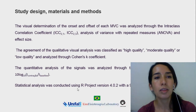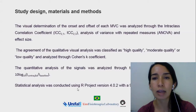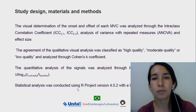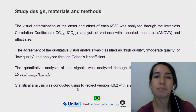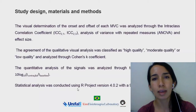The visual determination of the onset and offset of each maximal voluntary contraction was analyzed through the intraclass correlation coefficient, analysis of variance with repeated measures, and effect size. The agreement of the qualitative visual analysis was classified as high, moderate, or low quality and analyzed through Cohen's kappa coefficient.